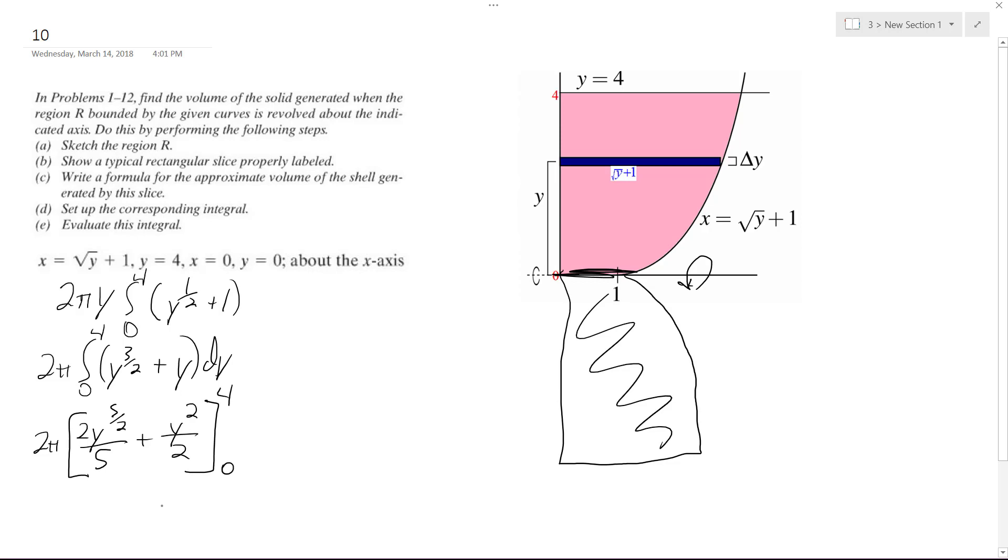All right, so when we integrate it, when we plug these numbers in, we get 2π. And then on the left part, we get 64 over 5 minus 16 over 2. And then for the 0 part, it's just 0 plus 0.